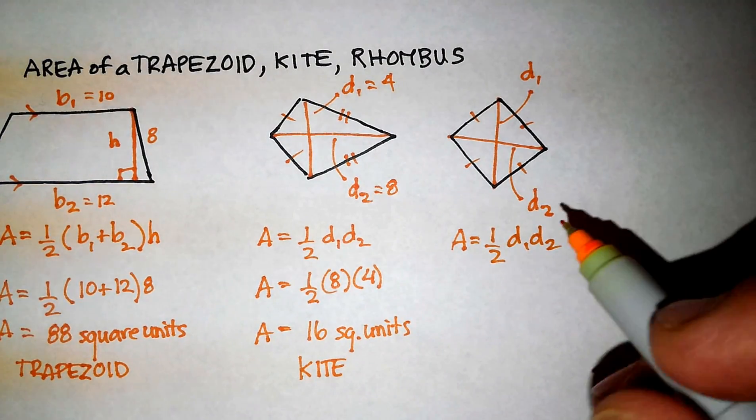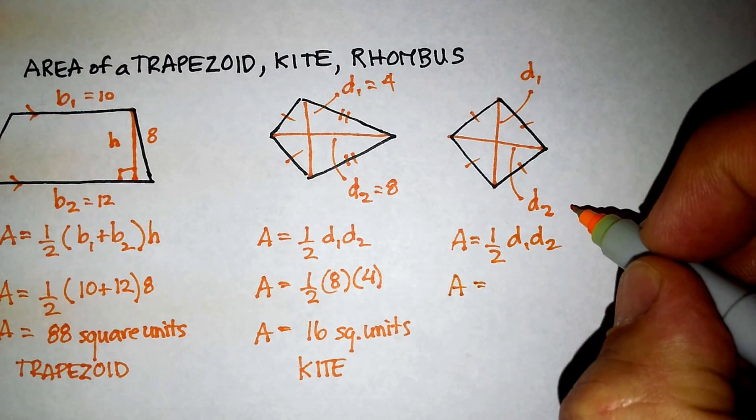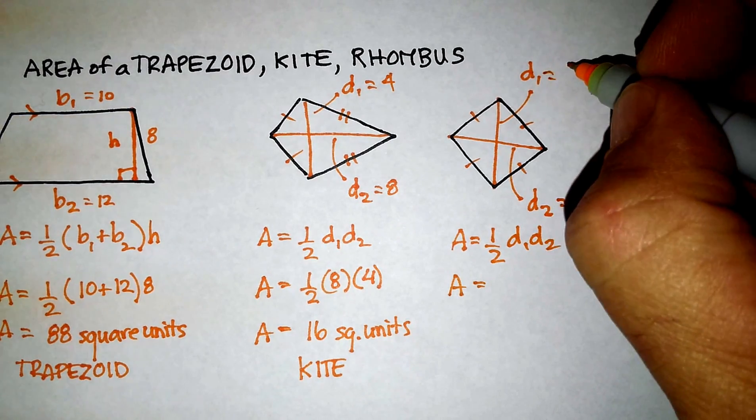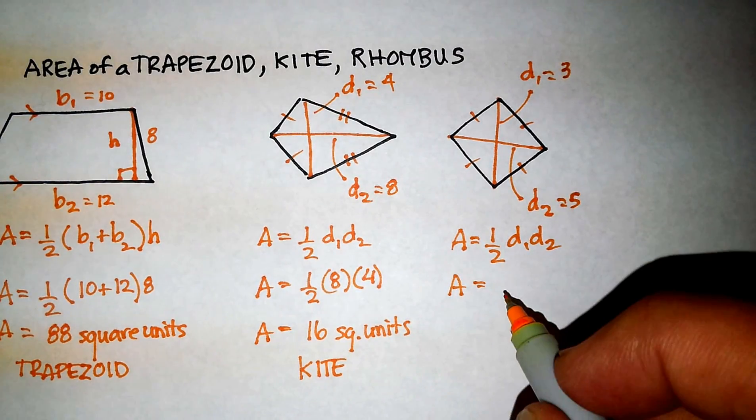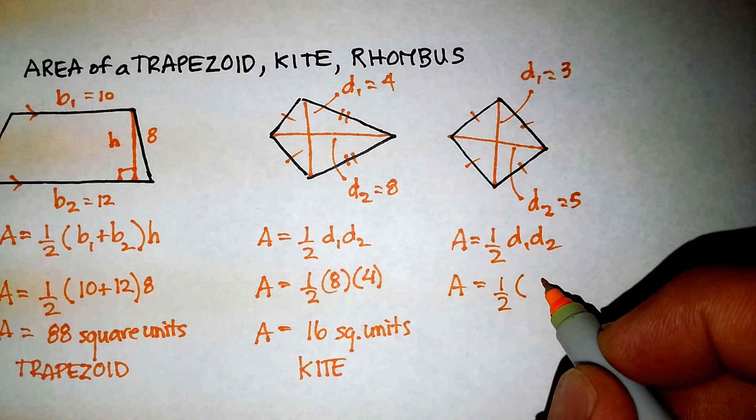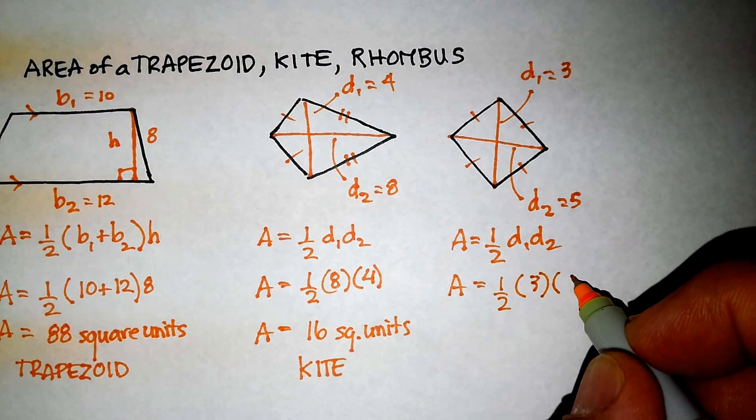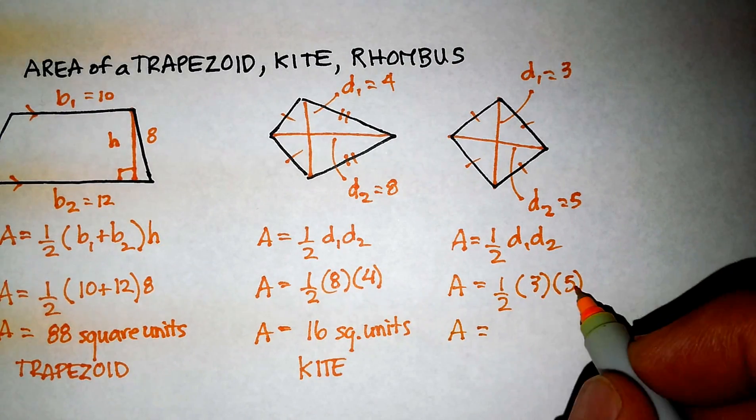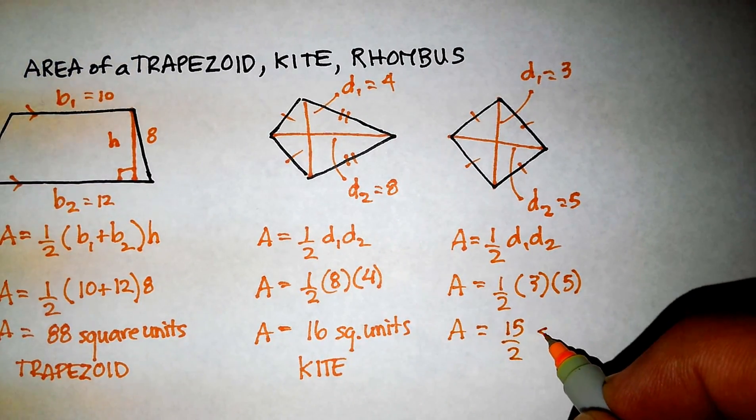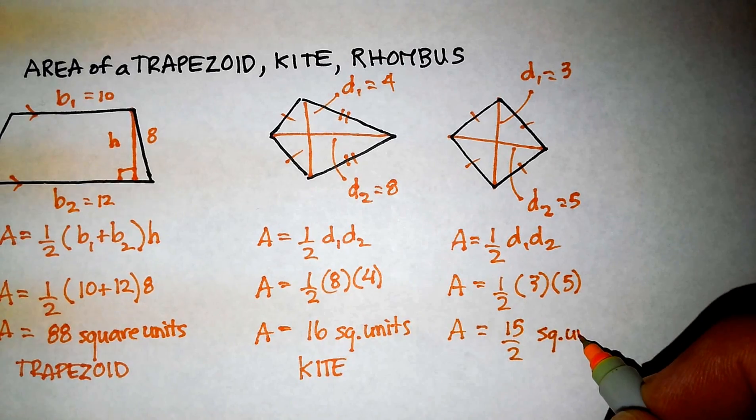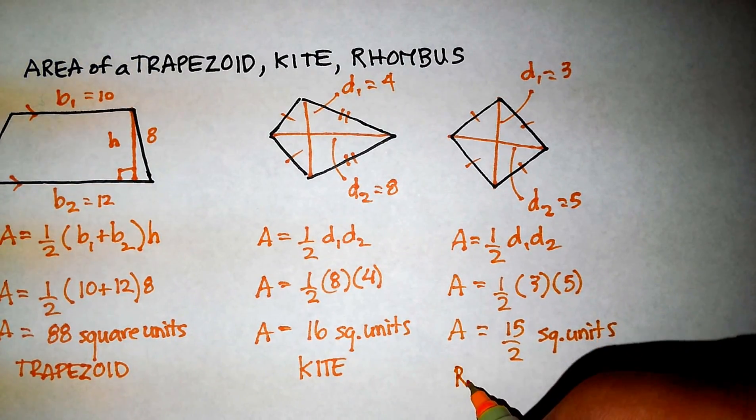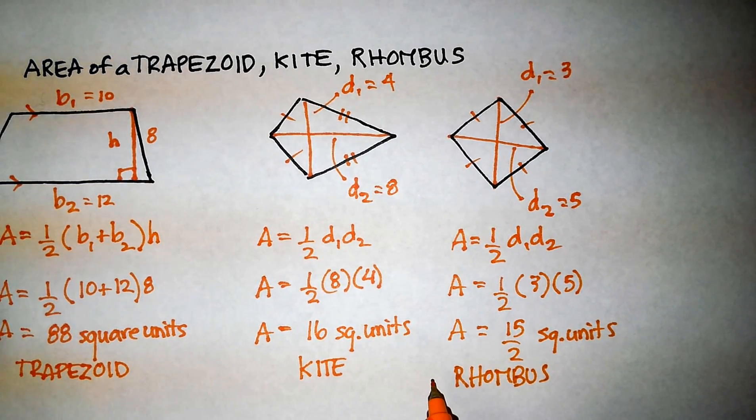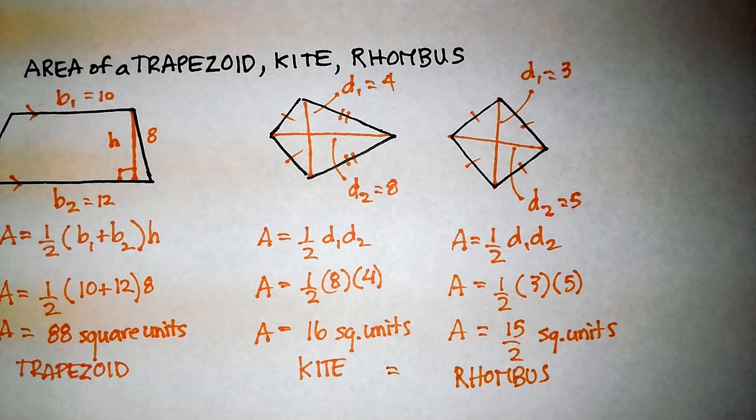So we probably won't even have to go through that, but let's just plug in some new numbers. Let's assume that d2 is something like 5, and let's assume that d1 is something like 3. We would get 1 half 3 times 5, which means that the area is 1 half of 15 or 15 over 2 square units. And obviously, the area of a rhombus and the area of a kite have the exact same formula.